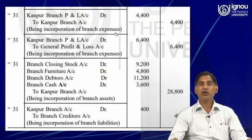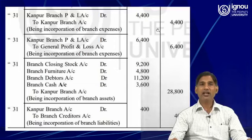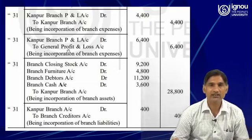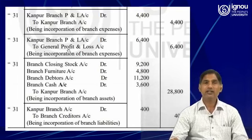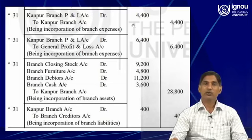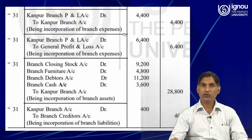Any amount which is supposed to be written in the debit side of the profit and loss account — for that, Kanpur branch profit and loss account has been debited. Any item which needs to be recorded in the credit side of the profit and loss account — for that, the reverse entry will be passed. Here there are two items which belong to expenses: incorporation of branch expenses, 6,400.